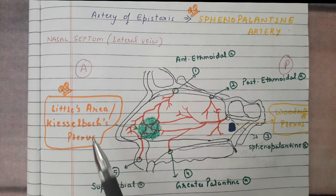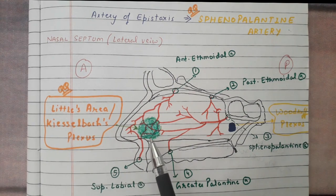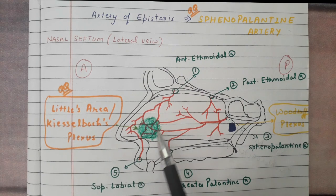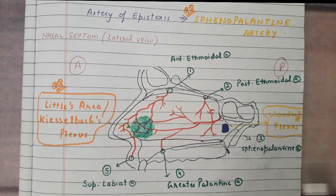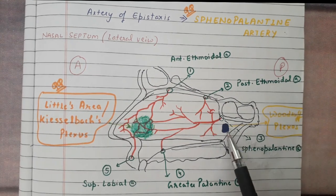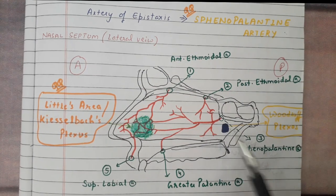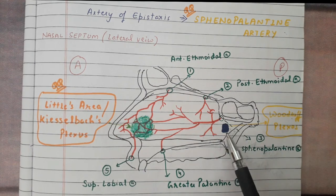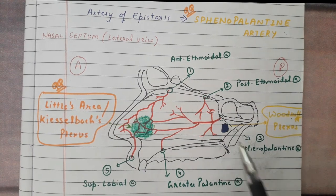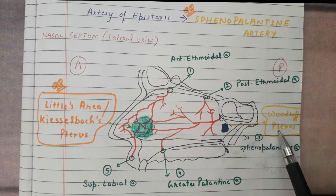Little's area or Kiesselbach's plexus is the most common site of epistaxis. Bleeding from this area is known as anterior epistaxis. On the posterior side, there is one more plexus known as Woodruff's plexus, and bleeding from this area is known as posterior epistaxis.